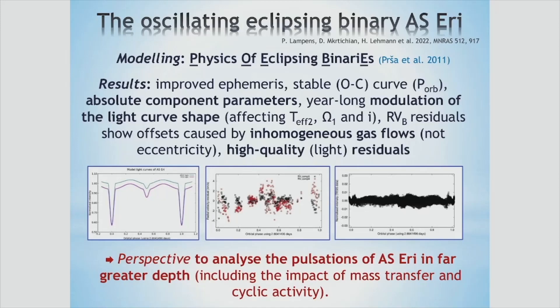You can see from the left illustration there is a modulation of the light curve shape. Some of the other results are also about the offsets in radial velocity of component B — not due to the eccentricity, but to the...